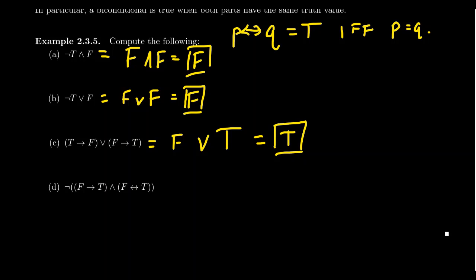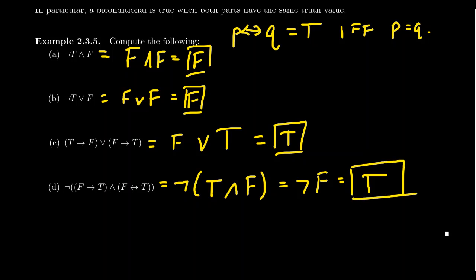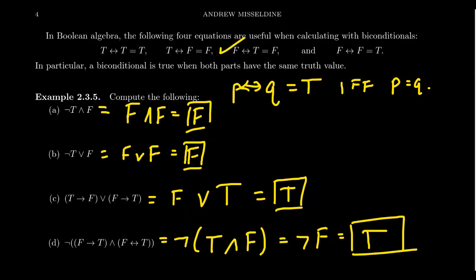Now look at this last one. Notice the negation applies to the entire conjunction. Inside the parentheses: false implies true is a true statement. Then we have a biconditional: false ⟺ true. Since false and true are different values, the biconditional is false. So we have true AND false, which is false. Not false then evaluates to true. So now we have all five operations — conjunctions, disjunctions, negations, conditionals, and biconditionals — and in the next lecture we'll start evaluating these Boolean expressions more formally.